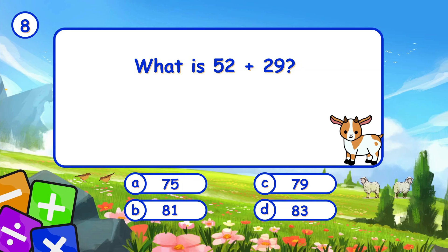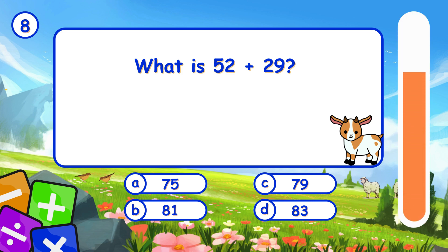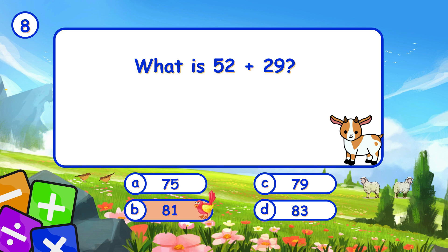What is 52 plus 29? It's B, 81. Adding 52 and 29 gives 81.